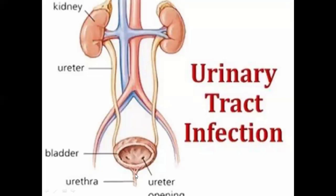In males, the prostate gland is present just behind or beneath the urethra. This entire structure is called the urinary tract. If infection — basically bacterial infection — occurs anywhere in this tract, it is called urinary tract infection.